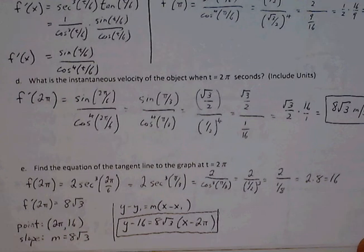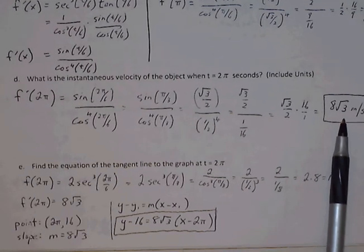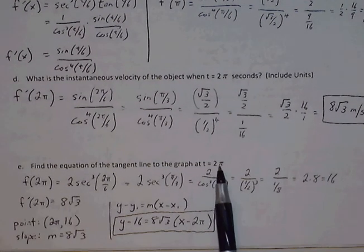In part E, find the equation of the tangent line to the graph at t is equal to 2 pi. So we have the slope at 2 pi. We just need to find the ordered pair.